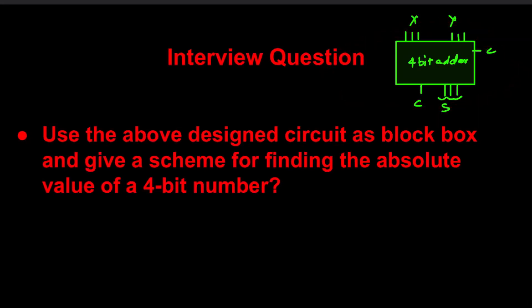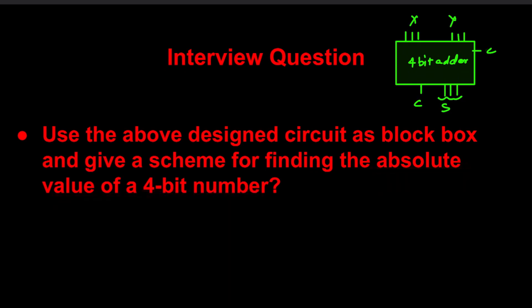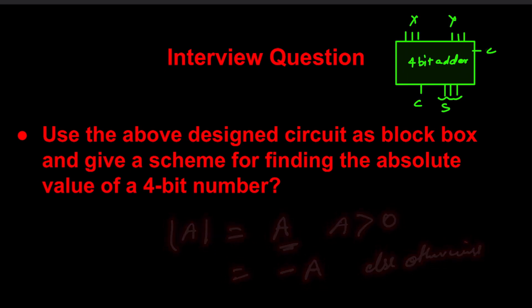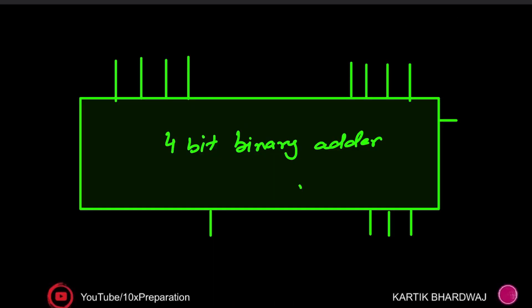In this video we consider this circuit as a black box and we need to find a scheme to calculate the absolute value of a 4-bit number. Absolute value means: if the number A is greater than zero, you provide the positive number A; but if it is negative or equal to zero, the result is minus A. Otherwise, that is the else condition.